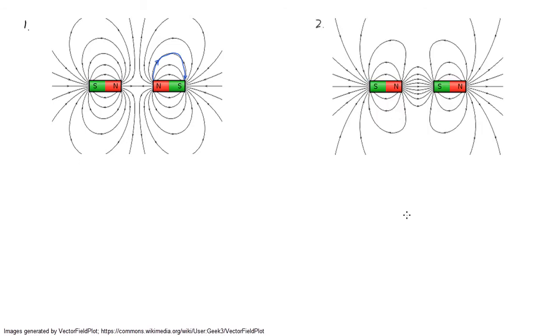In image two, the magnets are still placed end to end, except this time the north and south pole are facing each other. One of the field lines coming out from the north pole of the left magnet goes into the south pole of the right magnet.